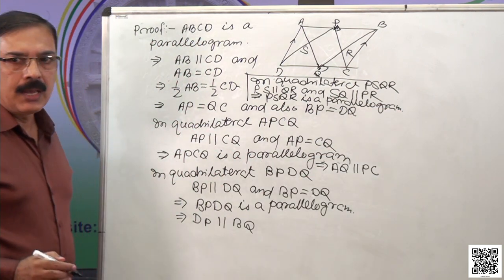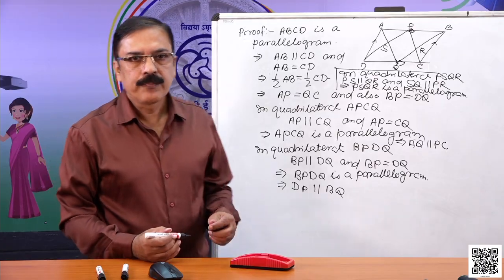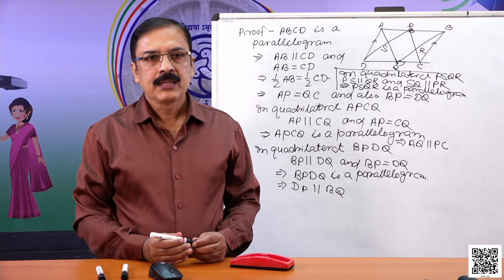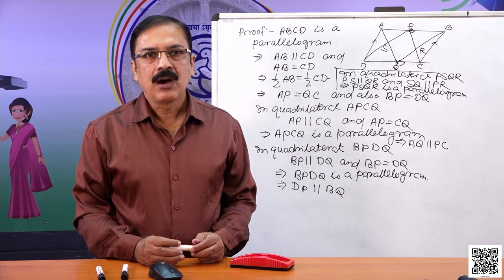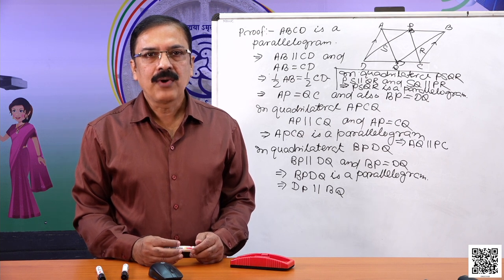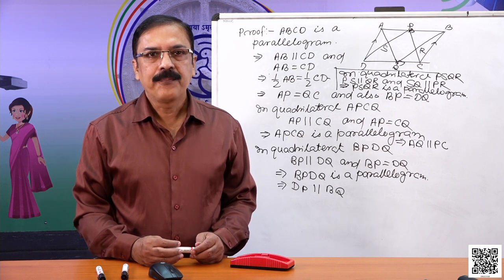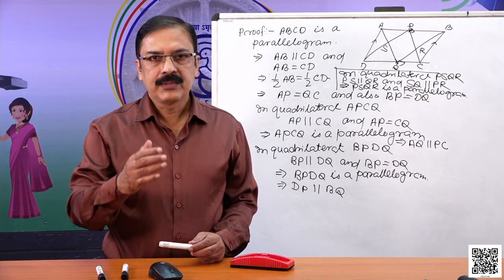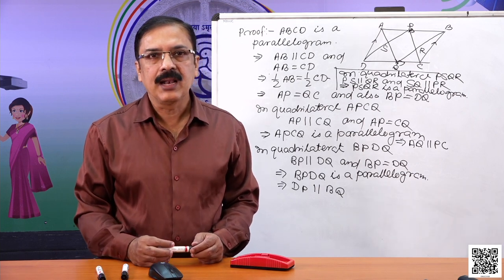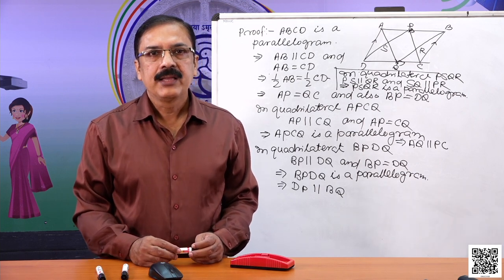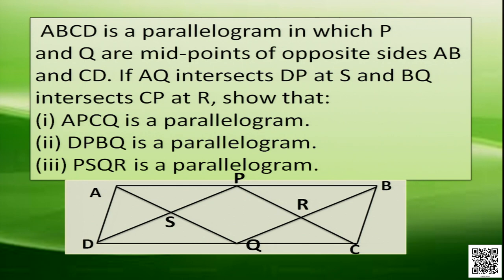So here, we proved by using the property that if one pair of opposite sides of a parallelogram are equal and parallel, then it is a parallelogram. Using this statement, we can prove this.